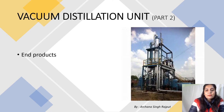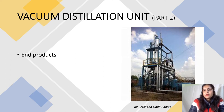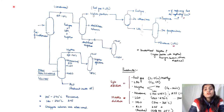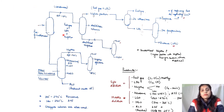In this video we will be studying vacuum distillation and the end products of both the crude distillation unit and the vacuum distillation unit. This was the diagram from the previous video showing the crude distillation unit and its products: fuel gas, LPG, naphtha, kerosene, LGO, HGO, and RCO. This residue was left at around 25 to 50 percent.